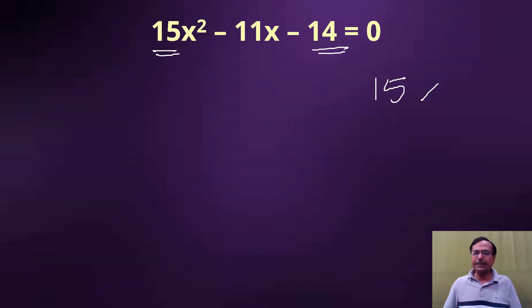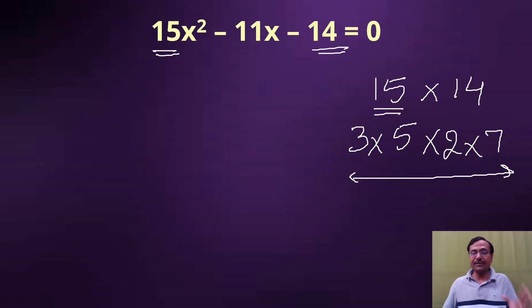So 15 times 14. Don't multiply them now. This is the first error or the mistake what the students are doing. We are multiplying 15 and 14, never do that. Rather break that in the factor form. So 15 is 3 times 5 and 14 is 2 times 7.